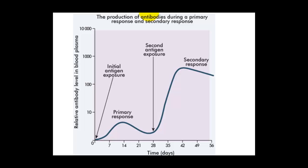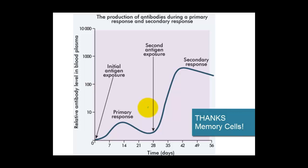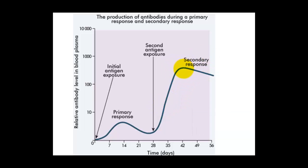To relate that to what we know about immunity: after our primary response, we've developed some memory cells. When those memory cells are in the system, they can proliferate and reproduce lots and lots of antibodies very, very quickly. And that's exactly what we see — this secondary response is very high because there are lots of memory cells that can reproduce very quickly.